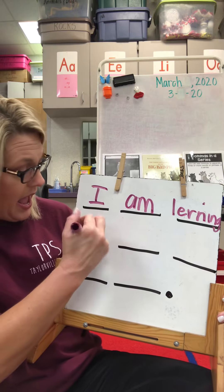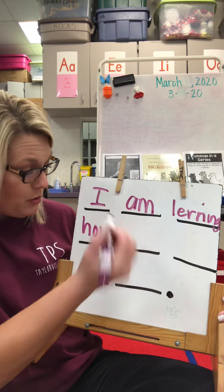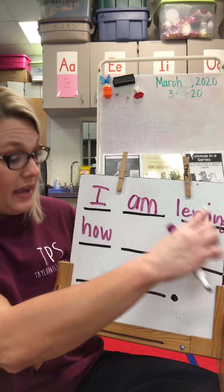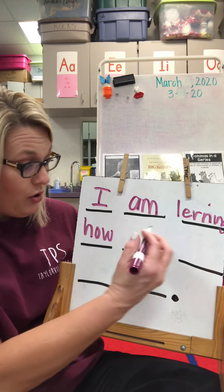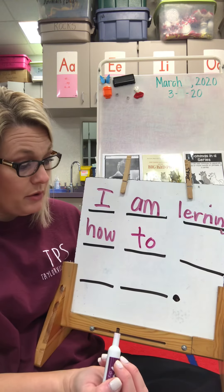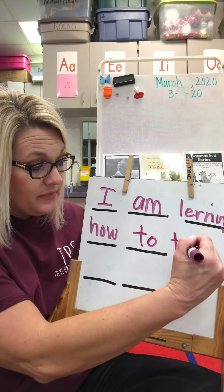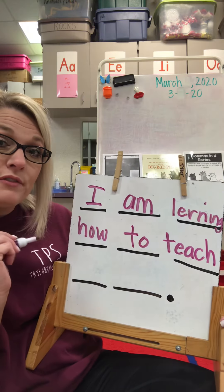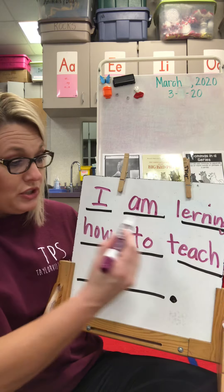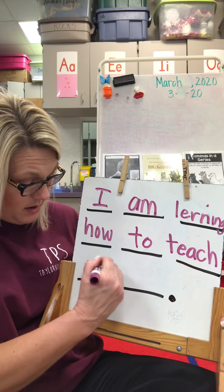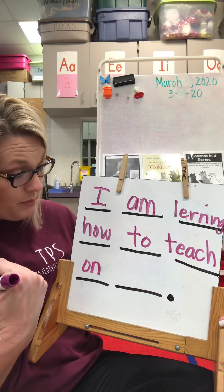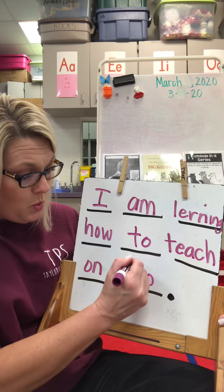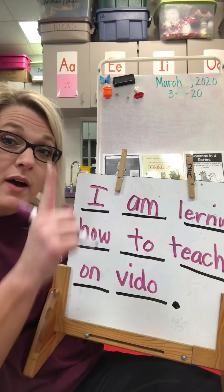I am learning 'how' — that is a sight word you should know, or if you can't remember it, that's 'ow' like cow, that we've learned in phonics. 'I am learning how to' — another sight word you should know. 'Teach' — T, E like leaf, CH like cheese. We've done all of those sounds. 'I am learning how to teach on' — another sight word you should know — 'video': V, I, D, O — video. So I'm one sentence down, got two more to go.